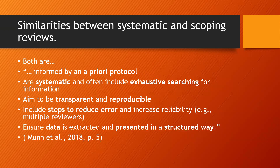What are the similarities between systematic and scoping reviews? According to Munn and associates from a 2018 study, both are informed by an a priori protocol — though I think that's more aspirational than factual, at least for scoping reviews, where a protocol is not always produced before beginning the study. With systematic reviews it's fairly common, and there are registries where you can register them and publish your protocols in advance in scholarly journals. Both are systematic and often include exhaustive searching for information.